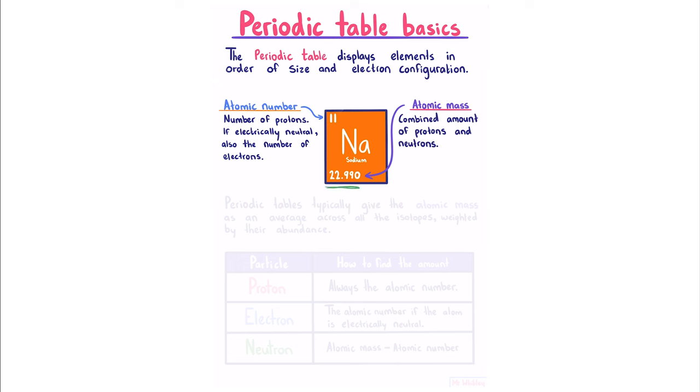You may ask, why is this a decimal? This is because periodic tables typically give the atomic mass as an average across all the isotopes weighted by their abundance.